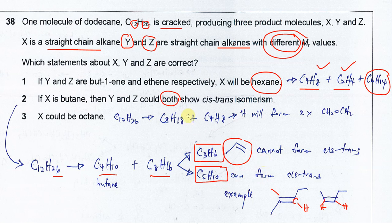The second statement says both could show cis-trans, so this statement is wrong because cis-trans is only able to be shown by C5H10. The second statement is wrong, the first one is correct.